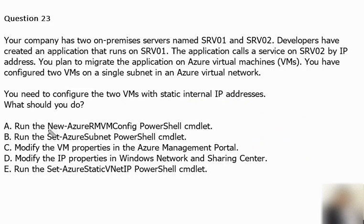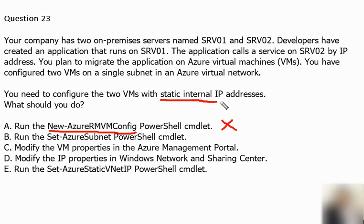Option A is to run the New-AzureRMVMConfig PowerShell command. This command is used to create a configurable virtual machine object. It will not be useful for setting a static internal IP address in this case. So option A is incorrect.